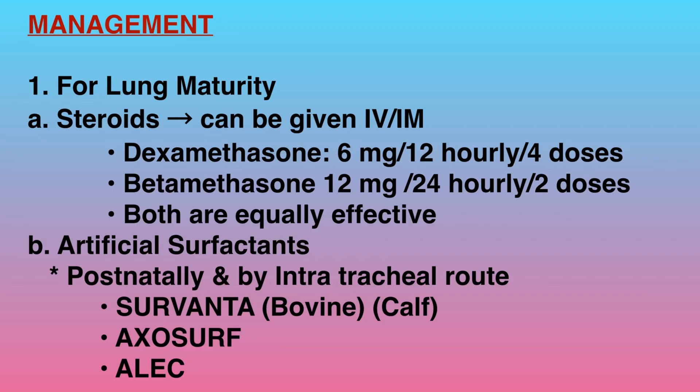Now let's talk about the management for lung maturity. Steroids can be given IV or IM. Dexamethasone is given 6 mg every 12 hours for 4 doses, whereas betamethasone is given 12 mg every 24 hours for 2 doses — and both are equally effective. We can also give artificial surfactants postnatally by intratracheal route: 1. Survanta, 2. Exosurf, 3. BLES.